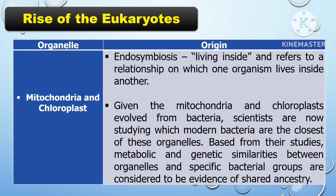Bacteria have their own DNA in the form of a singular chromosome and have at least two outer membranes with an innermost membrane similar to the bacterial plasma membrane. Recognition of these similarities led to the endosymbiotic hypothesis, which states that mitochondria and chloroplasts both evolved from bacteria. Endosymbiosis — living inside — refers to a relationship in which one organism lives inside another. Scientists are now studying which modern bacteria are closest to these organelles, and metabolic and genetic similarities between organelles and specific bacterial groups are considered evidence of shared ancestry.